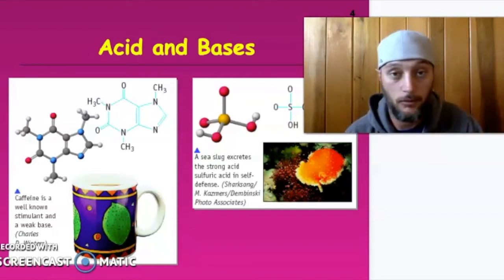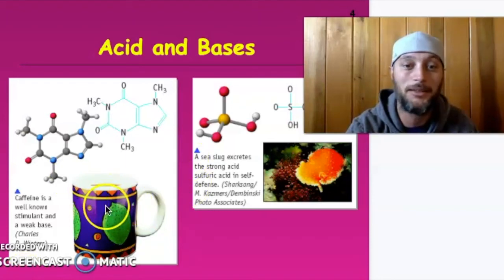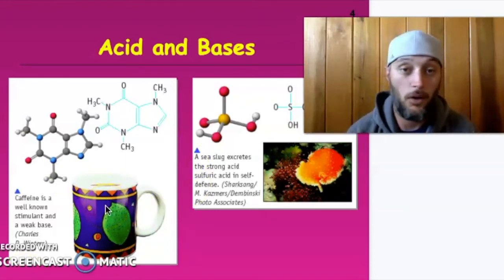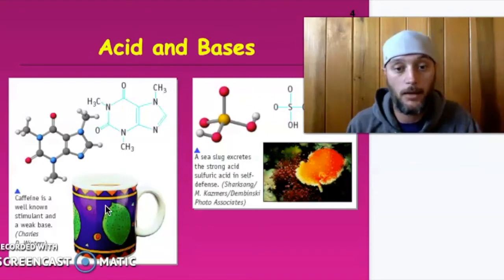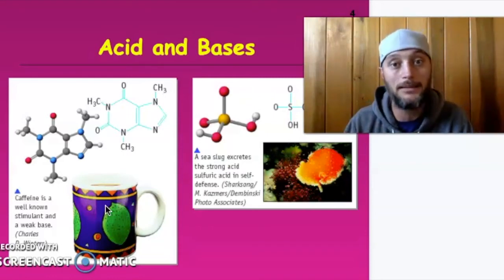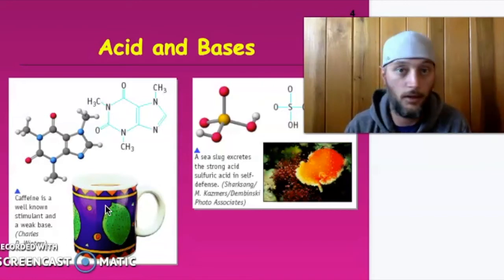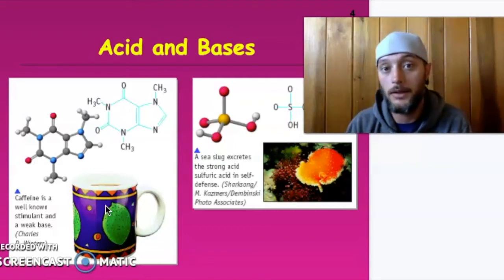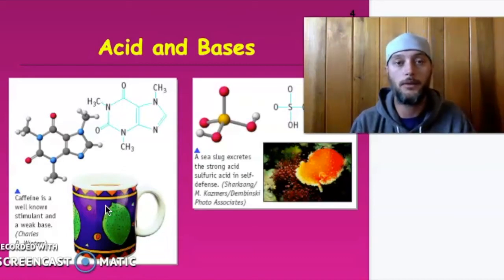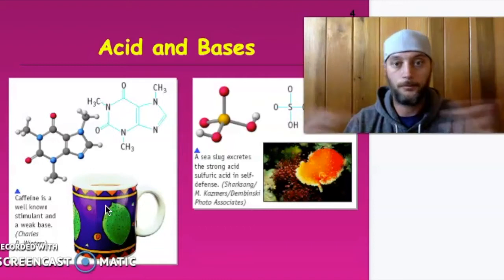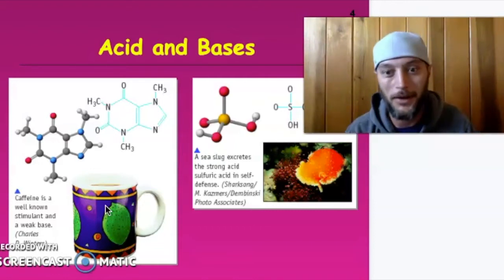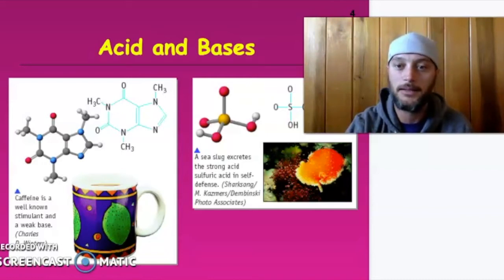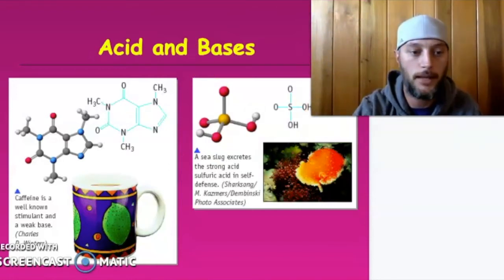A couple more examples. Caffeine is a stimulant that's a weak base — that's one we all deal with all day every day. You could think about how knowing it's a base could help you make better coffee. Could I make coffee not affect my blood pressure? Not give me sweaty palms? And then sea slugs — they have a strong acid they use in self-defense. No shock there — acids can be used as self-defense.